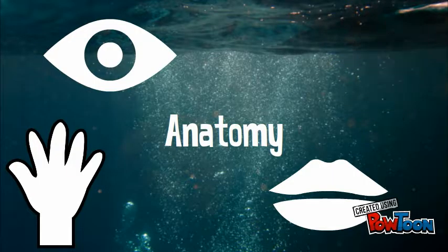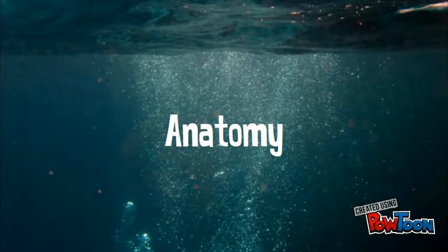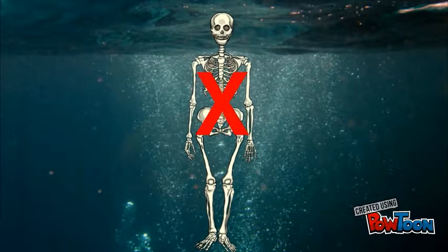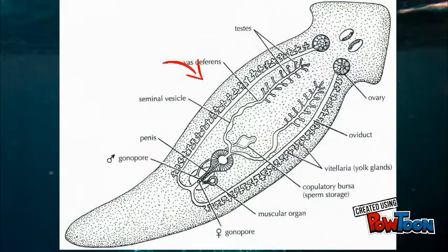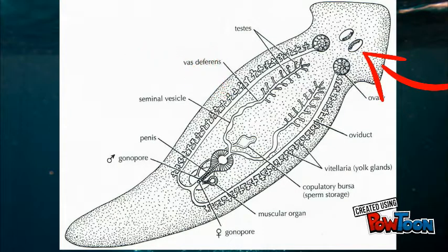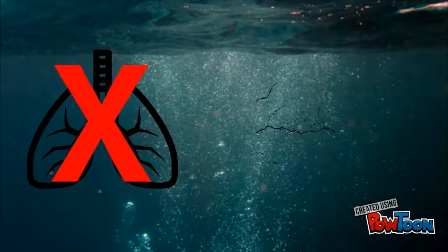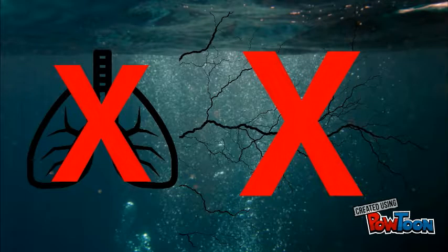Anatomy of a flatworm. A flatworm does not have a skeleton. They have two nerve cords running down either side of their body, connecting to their brain. They also have two eye spots at either side of their head region that can sense light. A flatworm does not have a respiratory or circulatory system. Since they are so thin, they can take in oxygen directly through their skin.